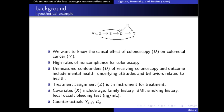The measured confounders denoted by X include age, family history, BMI, smoking history, and the results of a test called the fecal occult bleeding test. In order to set the stage for the causal effects we're going to be interested in, we need to define two different kinds of counterfactuals.